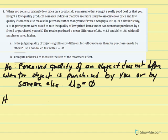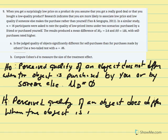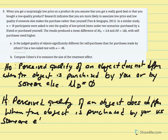The research hypothesis states that the perceived quality of an object does differ when the object is purchased by you versus someone else. We would see a difference — the average difference would not equal zero. We anticipate seeing a difference in how someone perceives the value of an item when purchased by themselves versus by someone else.